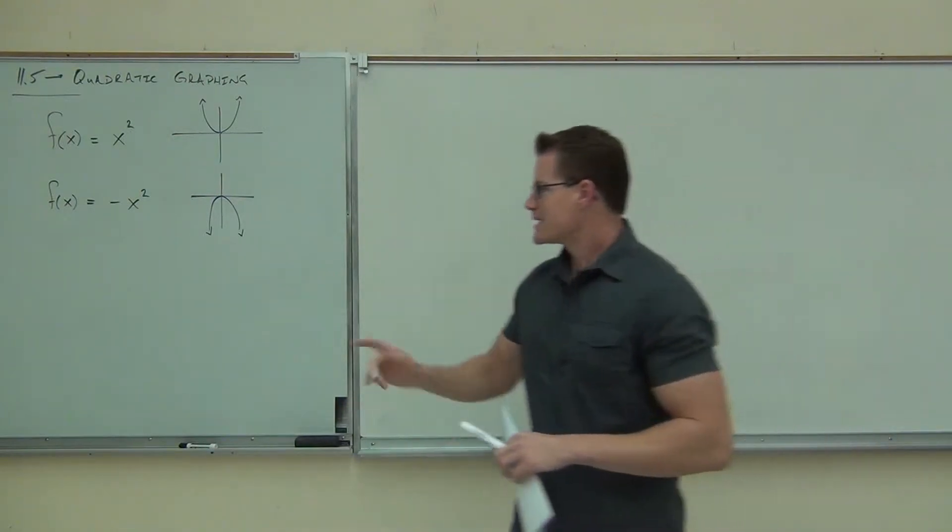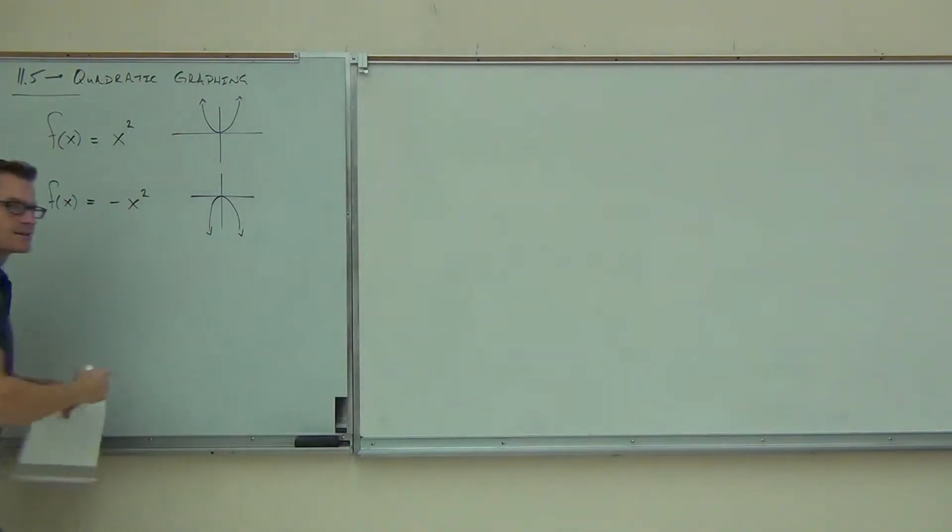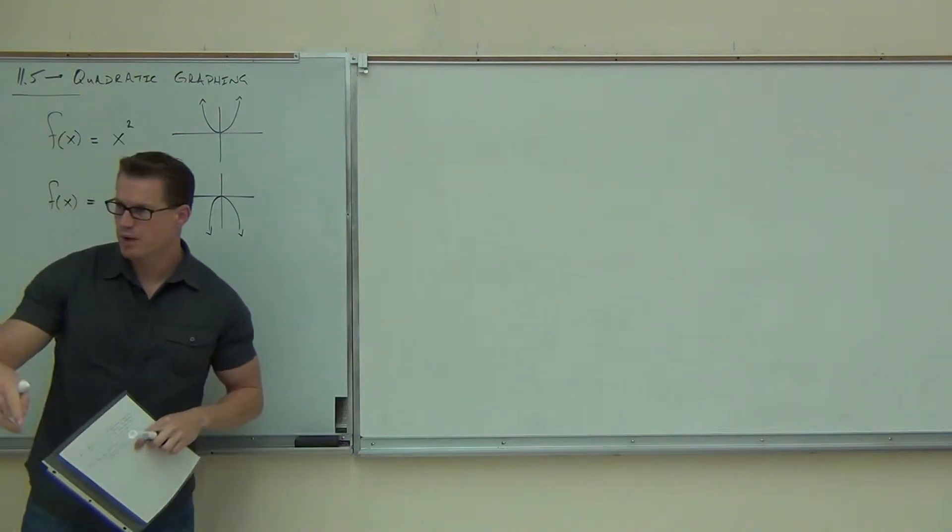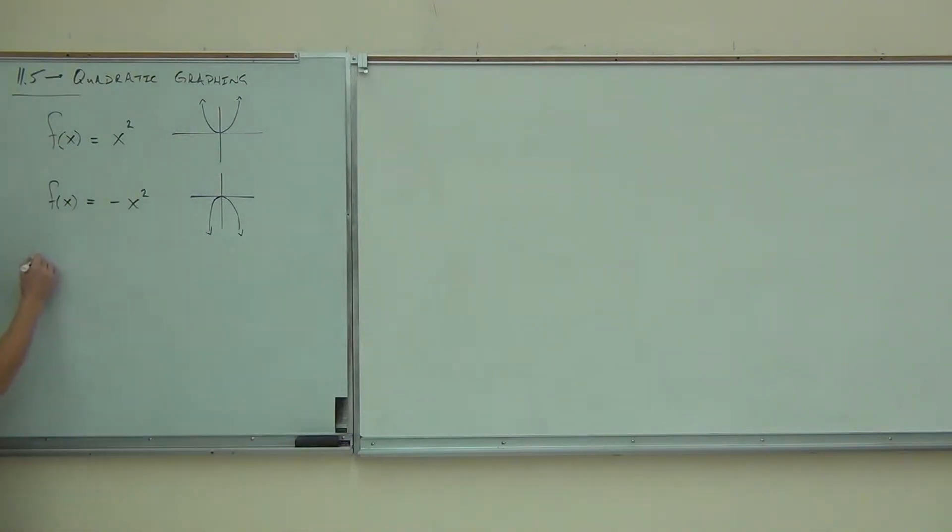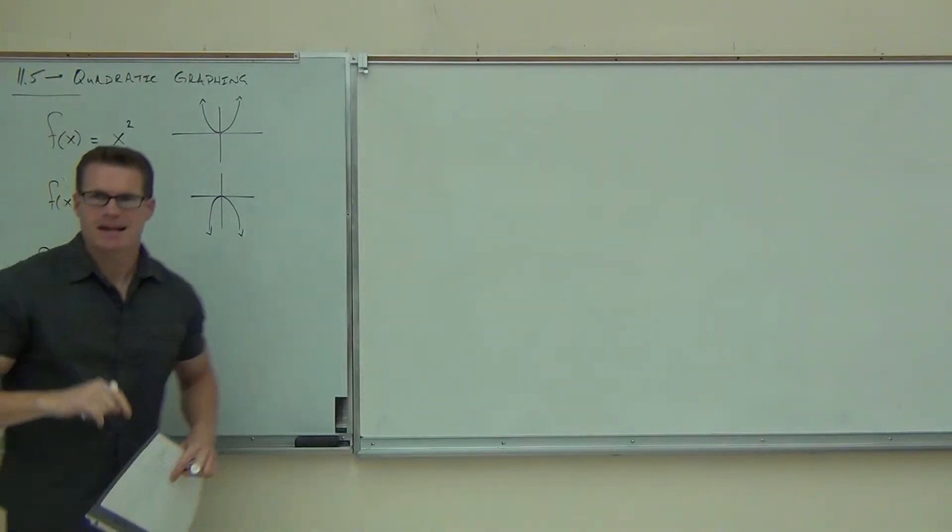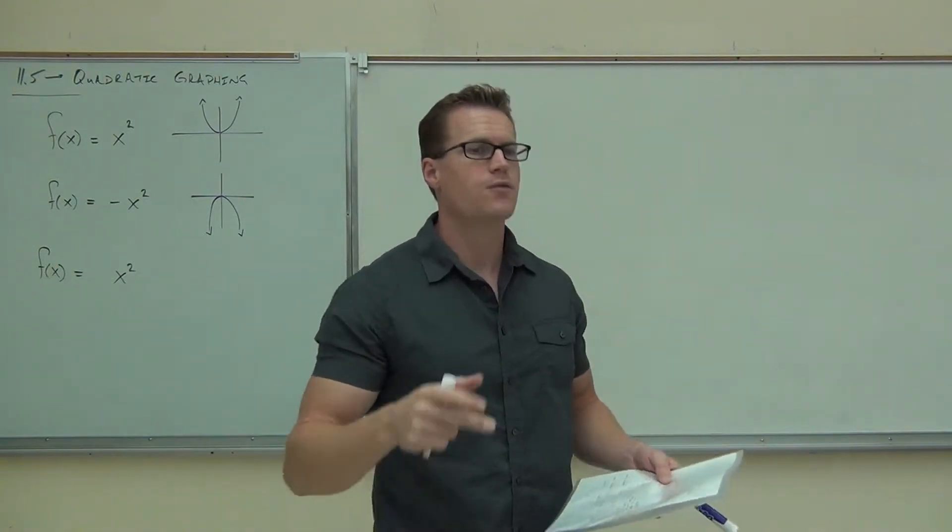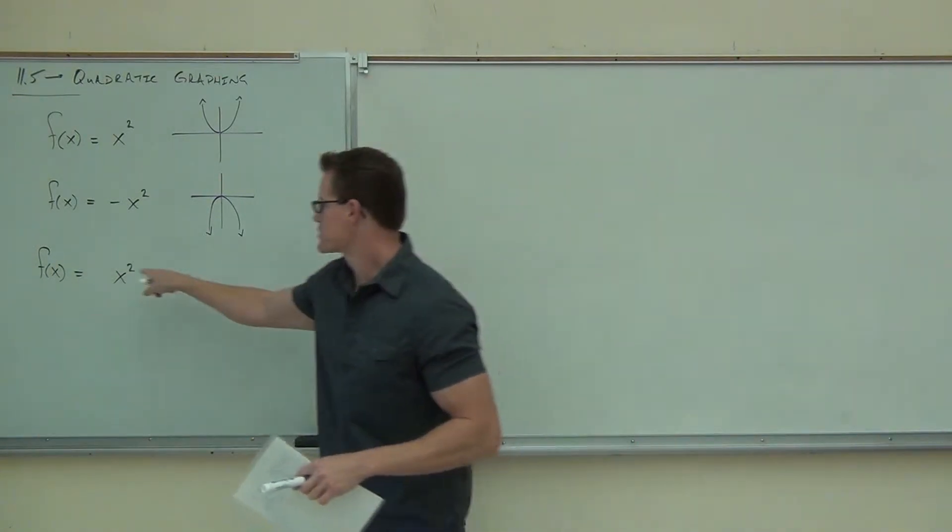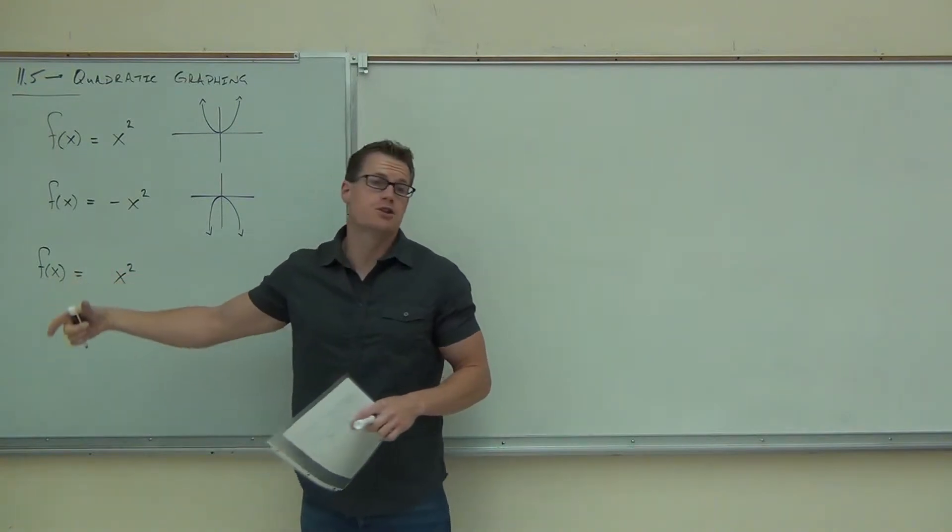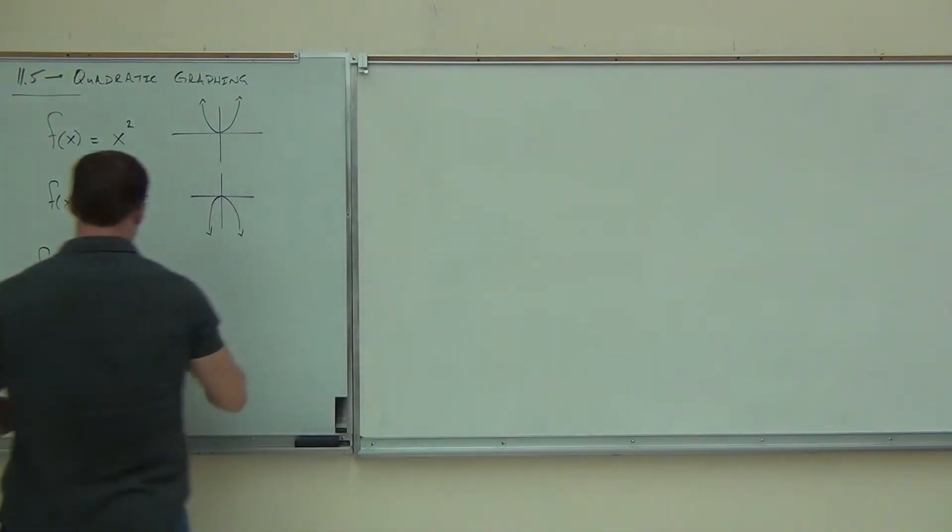Well, here's the deal. Anytime we have a graph that has an x squared in it where the square is the largest power, for instance, this right here. Anytime we see that square, that means you are going to be dealing with a parabola because you've got a quadratic function. This right here, when we have this equal to a function, that's called function notation. So this is a quadratic function.